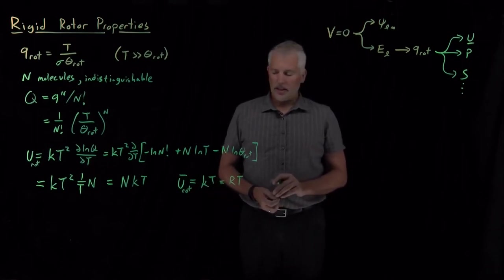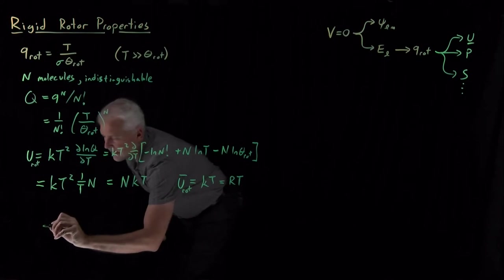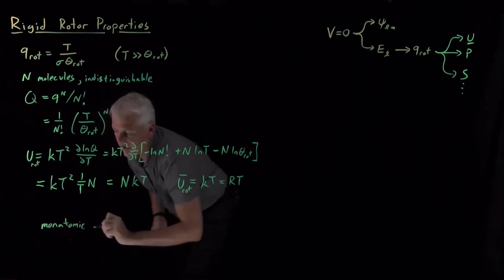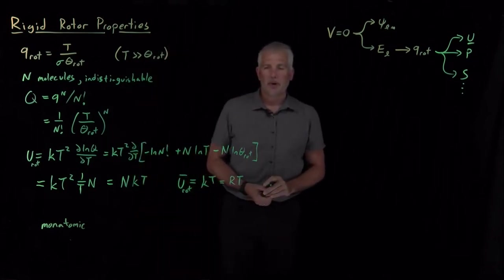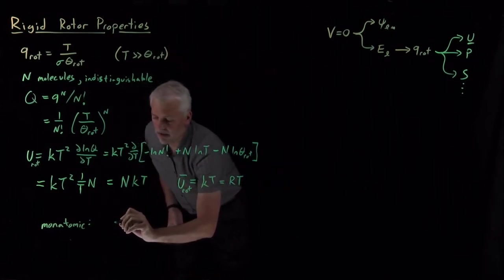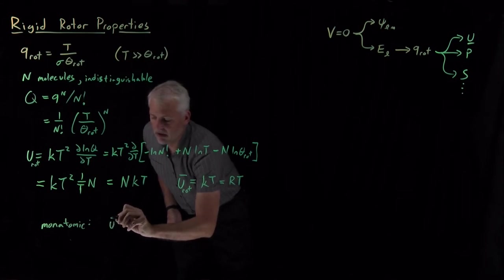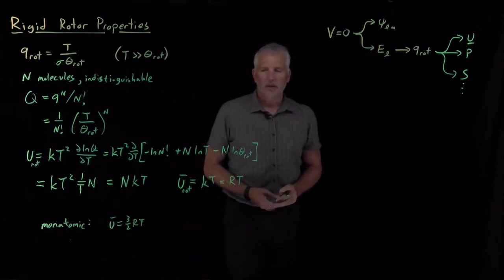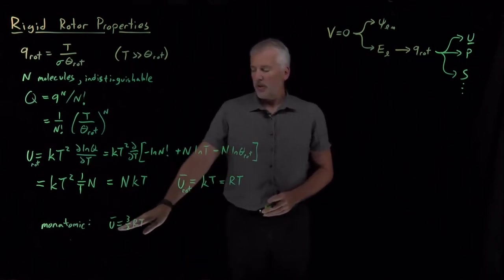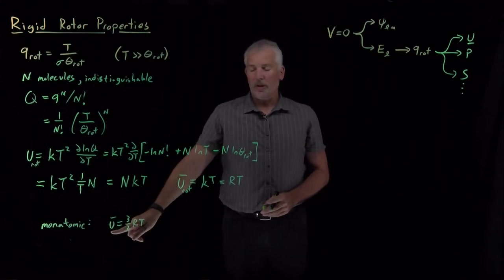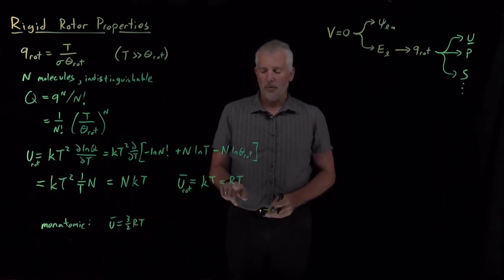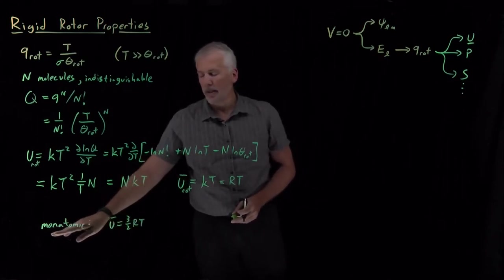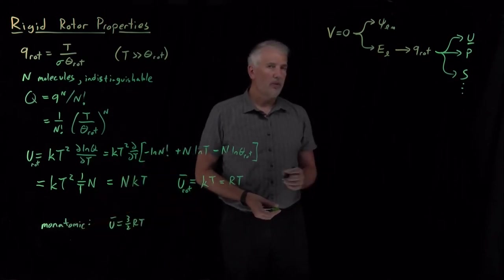We've already seen, we already know something about monatomic ideal gas molecules from when we studied the 3D particle in a box. We got a similar but not identical answer before. For monatomic ideal gases that we described with a 3D particle in a box, we found that the internal energy was three halves RT. Now, we found RT. The reason for the difference between these two and the reason I'm saying monatomic ideal gases for what we described with the particle in a box.